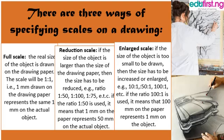The enlarged scale is about increasing the size of the object on the drawing paper. The scale for enlarged drawing is 50:1 or 100:1 — that is, 100 millimeters on the paper representing one millimeter on the actual object. Enlarging is the opposite of reduction: when you are reducing it is 1:50, and when you are enlarging it is 50:1.